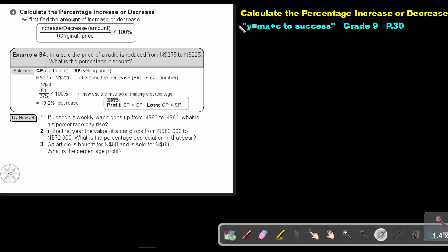Part 24. Calculate the percentage increase or decrease. You will find this on page 30 in the Namibia Mathematics Grade 9 textbook, Y equals MX plus C to success. Calculate the percentage increase or decrease.